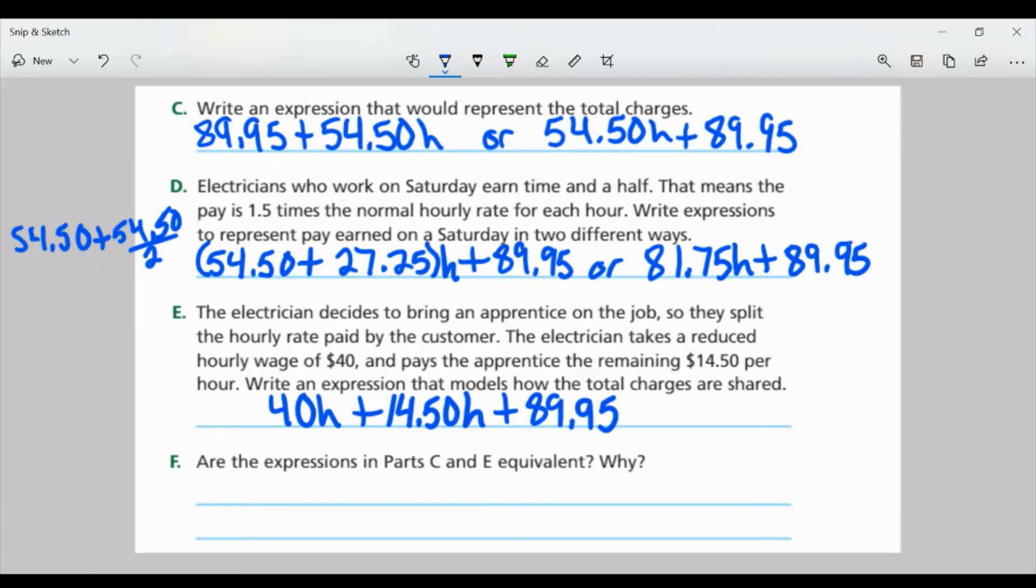Part F, are the expressions in part C and part E equivalent? Why? These are equivalent. And that's because when I combine my like terms in part E, 40H plus 14.50H is going to give me 54.50H. So yes. And I'm just going to rewrite my expressions and put them equal to each other.